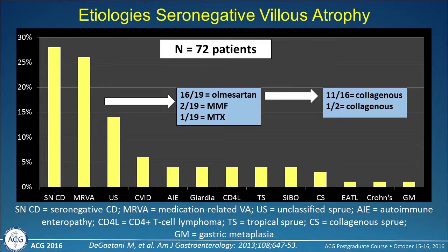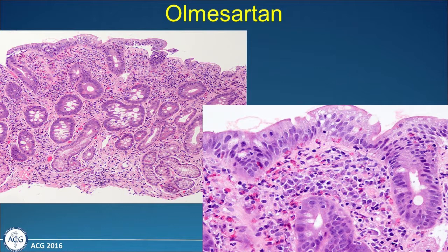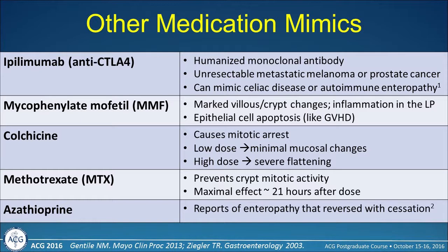Two of the 19 were on mycophenolate mofetil, one had significant collagen deposition, and one was on methotrexate. Histologically, olmesartan-induced enteropathy can look like one of the worst cases of celiac disease — complete villus atrophy, denuding of the surface epithelium from collagen deposition, and a combination of acute and chronic inflammatory cells. Other medications that can mimic celiac disease include ipilimumab, used to treat melanoma and prostate cancer; mycophenolate mofetil; colchicine; methotrexate; and azathioprine, with these results being reversible with drug discontinuation.